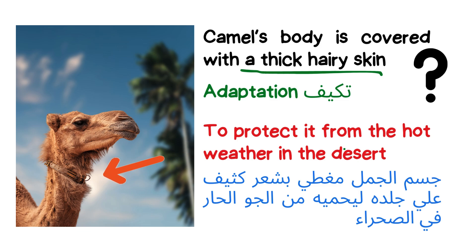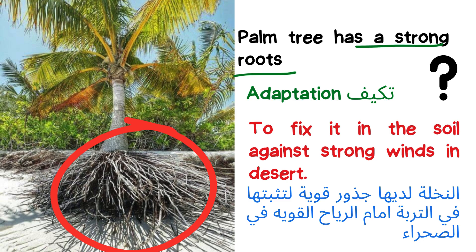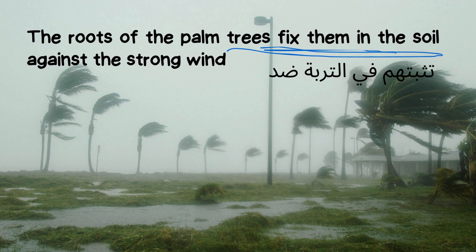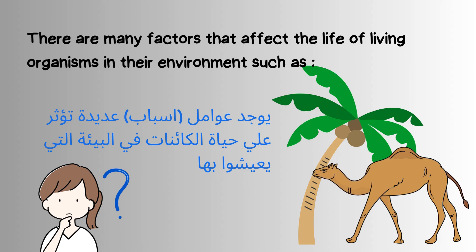Another example from plants: the palm tree has strong roots. You know what roots are — this is the roots. The roots fix the palm tree in the soil, making it strong so it cannot be broken by the strong wind in the desert. So the palm tree having strong roots is an adaptation to keep it strong and fixed in the soil so it cannot be broken.